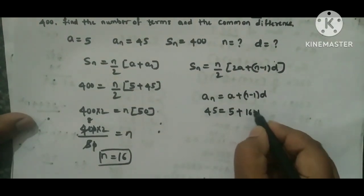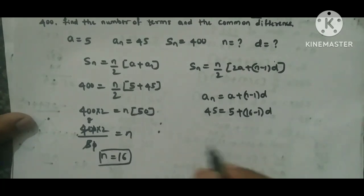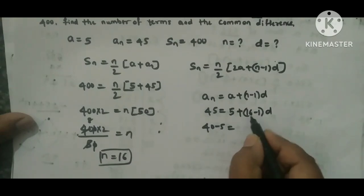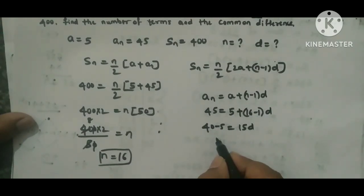So 45 minus 5, this 5 I'll transfer left side, 45 - 5 = (16-1) × d, which is 15d. 45 - 5 is 40 = 15d.